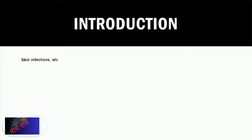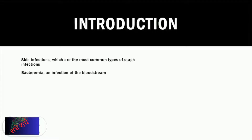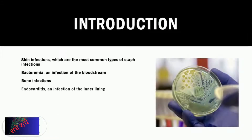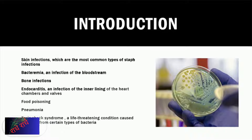Staphylococcal infections are caused by bacteria called Staphylococcus. These can range from skin infections to more severe conditions such as bacteremia, endocarditis, food poisoning, and toxic shock syndrome. Common skin infections can also lead to bacteremia, bone infections, and pneumonia. Endocarditis is an infection of the inner lining of the heart chambers and valves, while food poisoning can be caused by Staphylococcal infections. Toxic shock syndrome is a rare but potentially fatal condition caused by toxins from certain types of Staph bacteria.